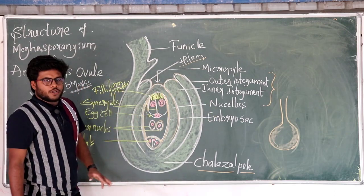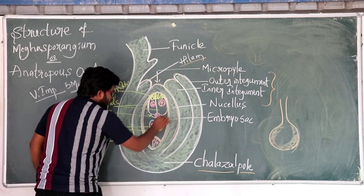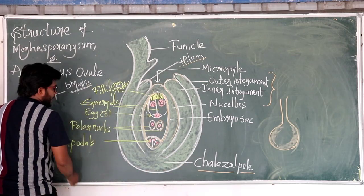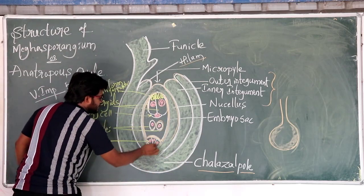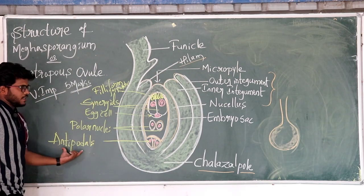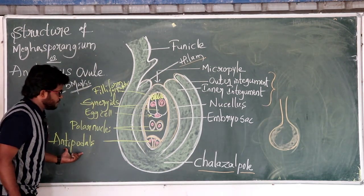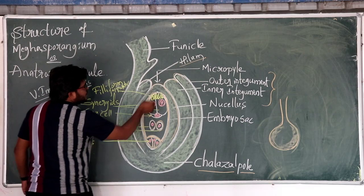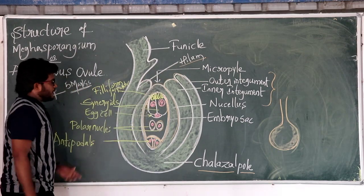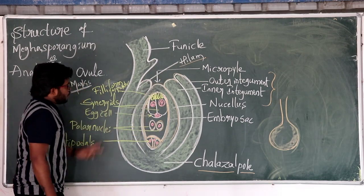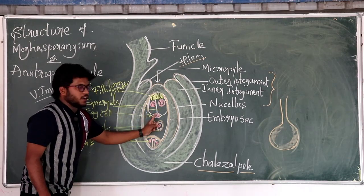What is the embryo sac structure? The embryo sac towards the chalazal pole has a cluster of three cells called as the antipodal cells. And towards the micropylar region, there are three cells, two synergid cells and one egg cell.